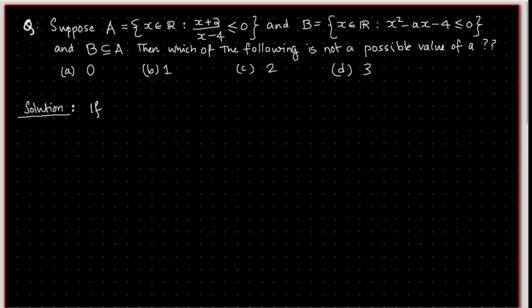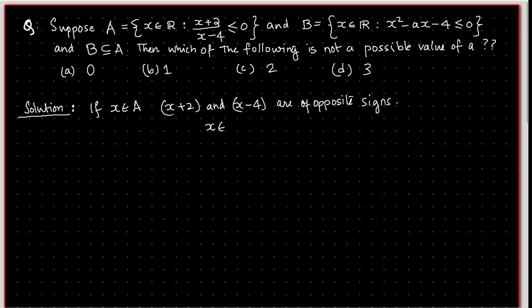If x is an element in A, it means (x+2)/(x-4) is negative, which means x+2 and x-4 are of opposite signs, because if the product of two real numbers is negative they are of opposite signs. This means x has to lie in between -2 and 4, where -2 can be included and 4 cannot, because if x takes the value 4, the denominator becomes 0, which is not possible.